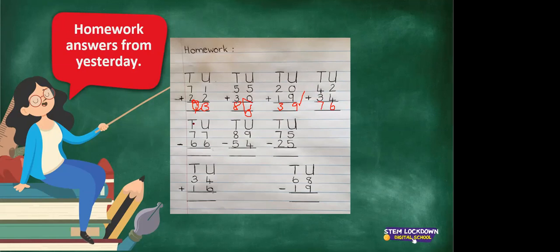Now we are moving on to subtraction where we minus. First the units, remember: 7 minus 6 leaves us with 1, and 7 minus 6 leaves us another 1, so the answer is 11. 89 minus 54: the 9 take away the 4 leaves us with 5, and 8 take away 5 leaves us with 3. Are you marking? 75 take away 25: 5 take away 5 is 0, and 7 take away 2 is 5.